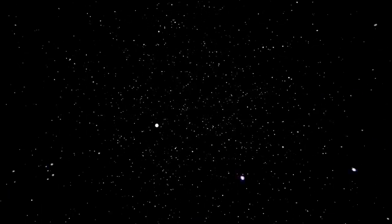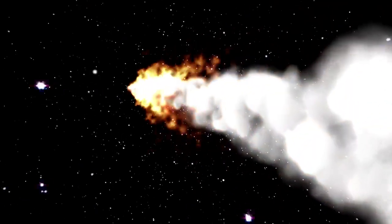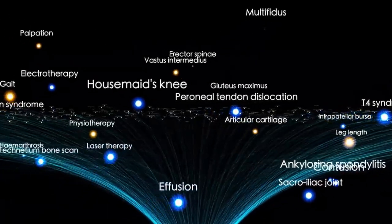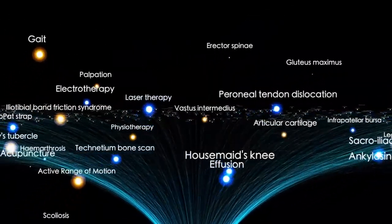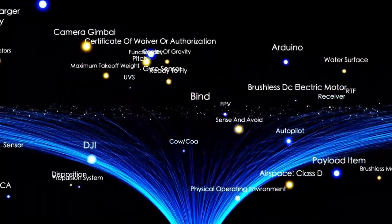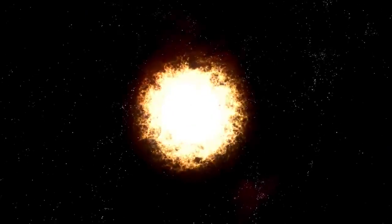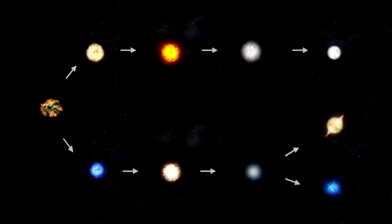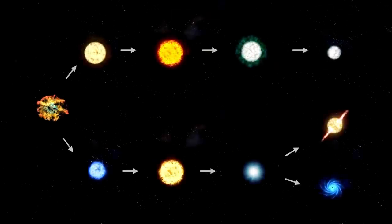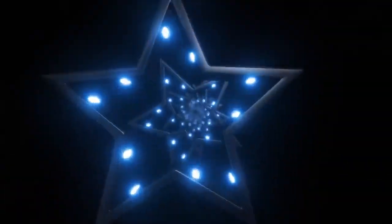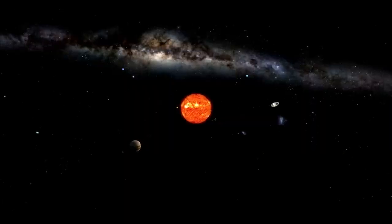More than just enormous, Betelgeuse is in a critical stage of its life known as the red supergiant phase. After billions of years fusing hydrogen into helium, it is now burning through heavier elements and slowly losing mass. Despite being around 8 to 8.5 million years old, relatively young in human terms, it's ancient by stellar standards. Massive stars like Betelgeuse live fast and die young, and its current state signals that the end may be near.